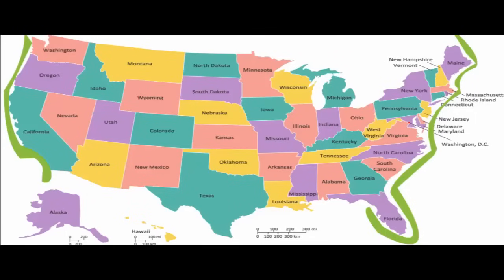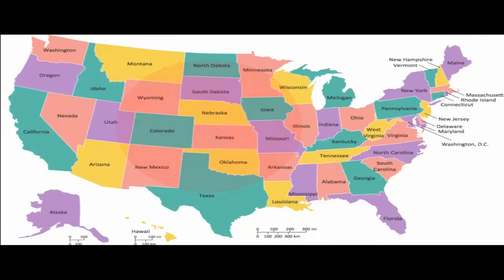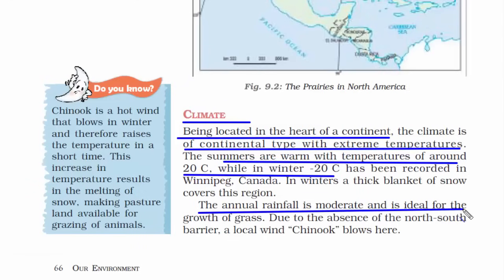Always remember: places near to the coastline will never see any seasonal rhythm of weather — they will constantly have humidity, sunshine, and rainfall. But it is the interior of the continent or landmass which will have extreme temperatures, meaning they'll have all sorts of seasons: summer, winter, rainy — everything. In the interior there will be a seasonal rhythm of temperature. The annual rainfall in this place is also very moderate — not too high, not too less — which is ideal for the growth of grass.